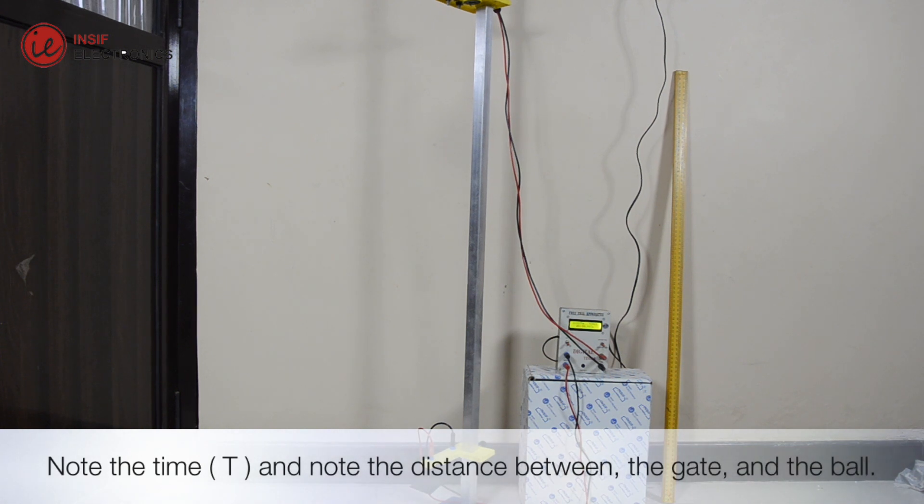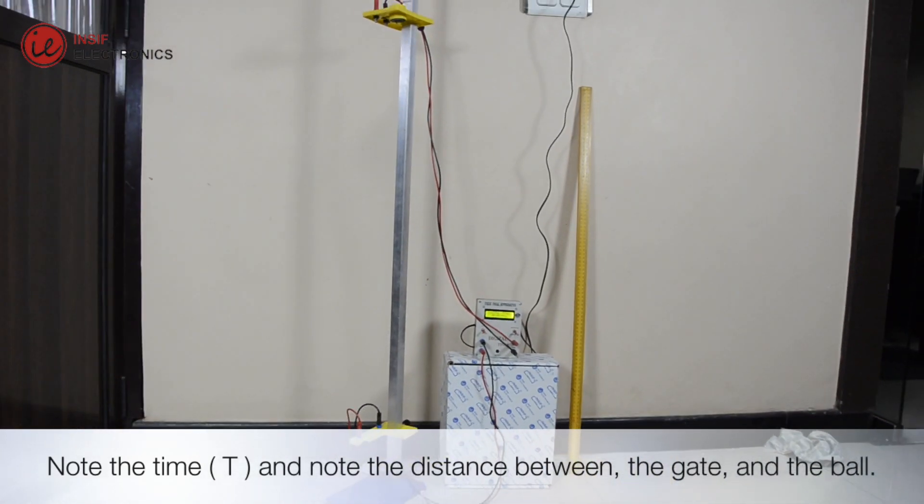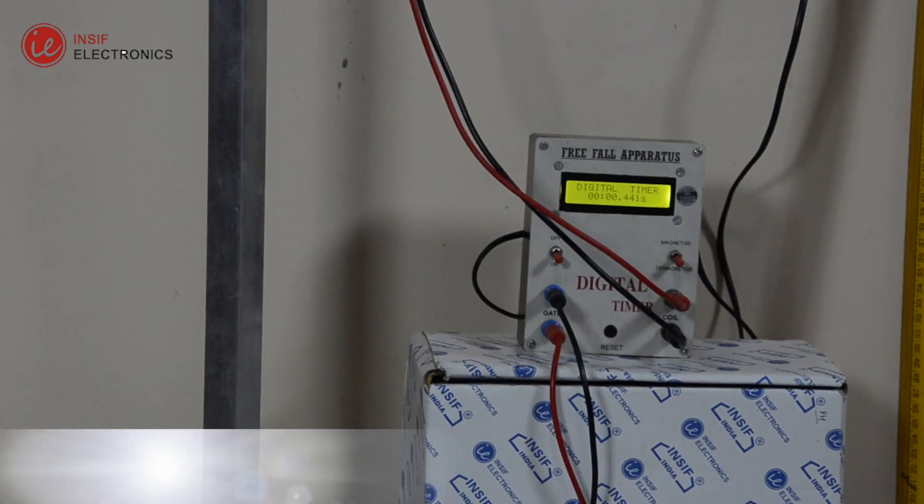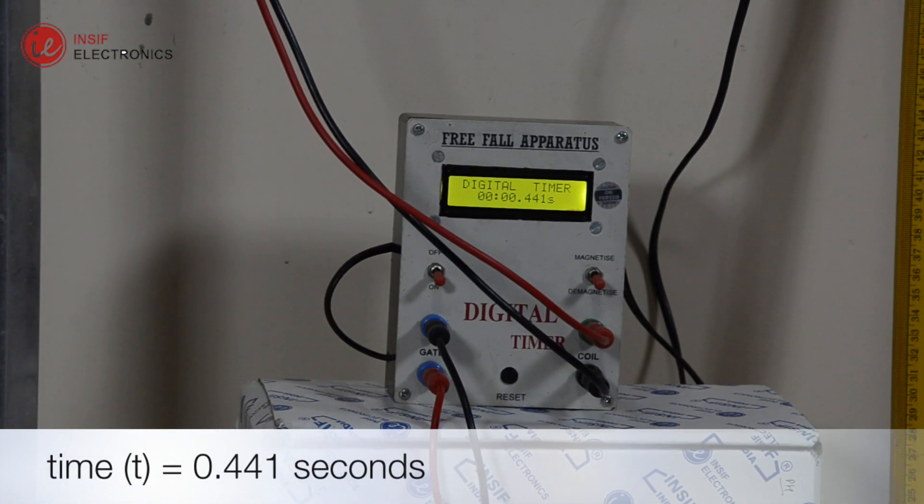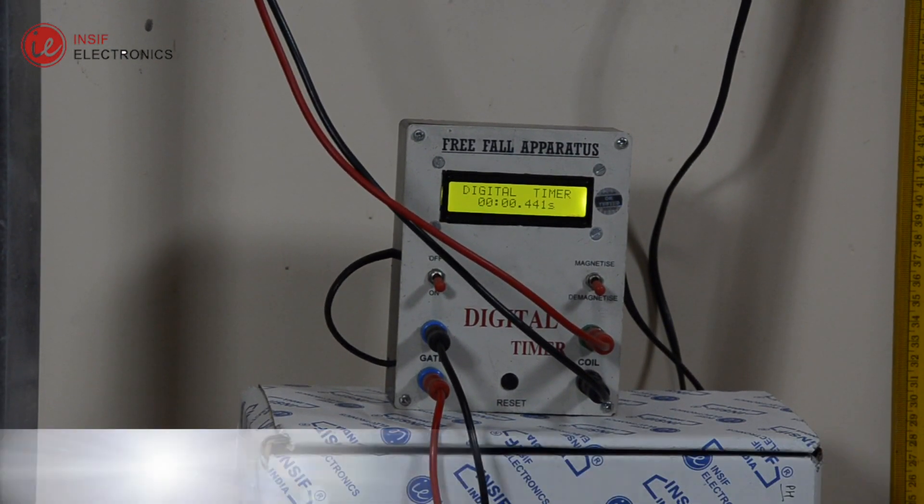Note the time t and note the distance between the gate and the ball. Time is .441 seconds and the distance is 95 centimeters.